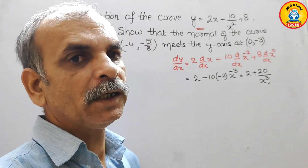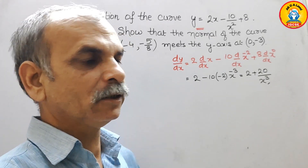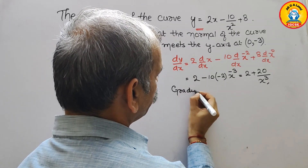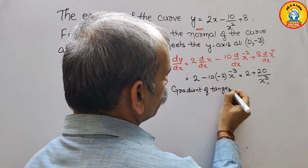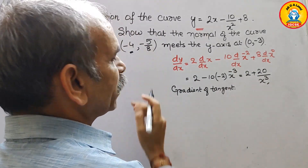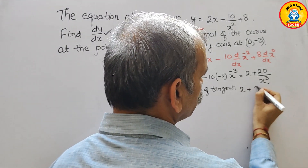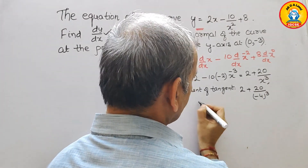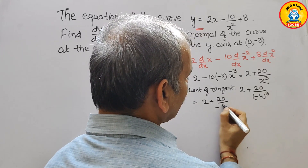Next, we have to find out the gradient of a tangent. For that, in place of x we have to substitute the value minus 4. So here you will get 2 plus 20 by minus 4 cubed. That is equal to 2 plus 20 by minus 64.